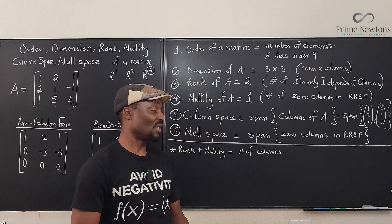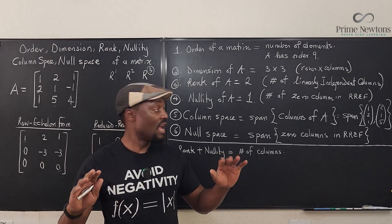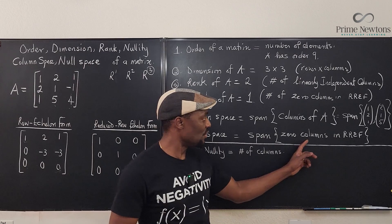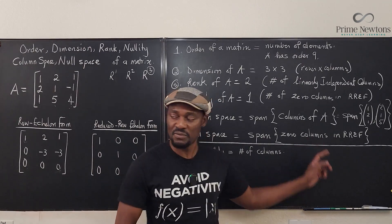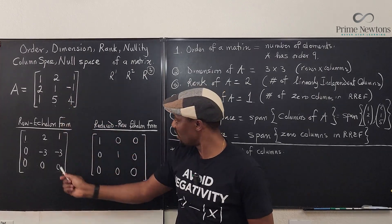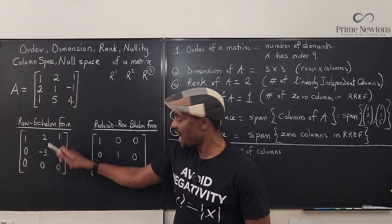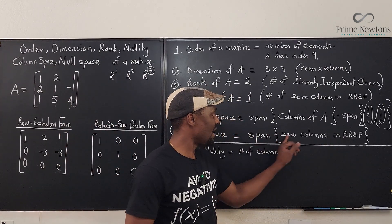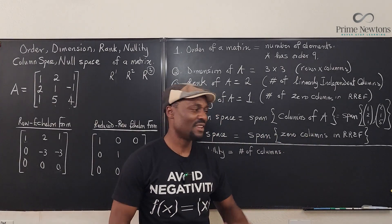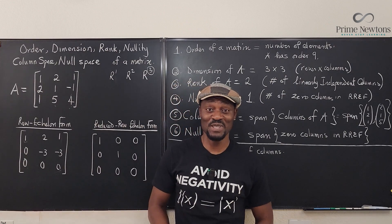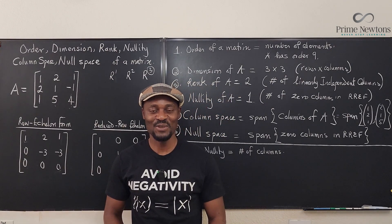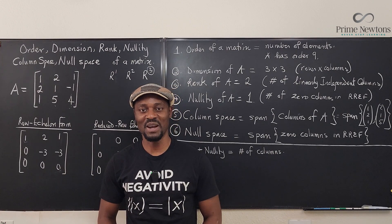I hope this was able to clear some confusion. If you want to know the span of the zero columns in reduced row echelon form, it would just be that ghost column — the span of just one vector. I'll see you in the next video. Never stop learning — when I stop learning, I've stopped living. Bye-bye.